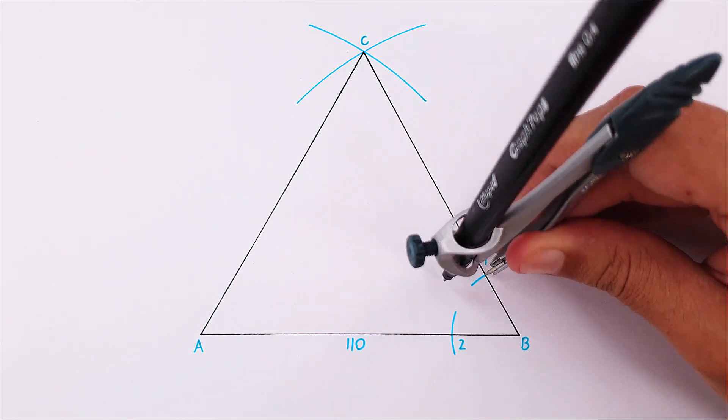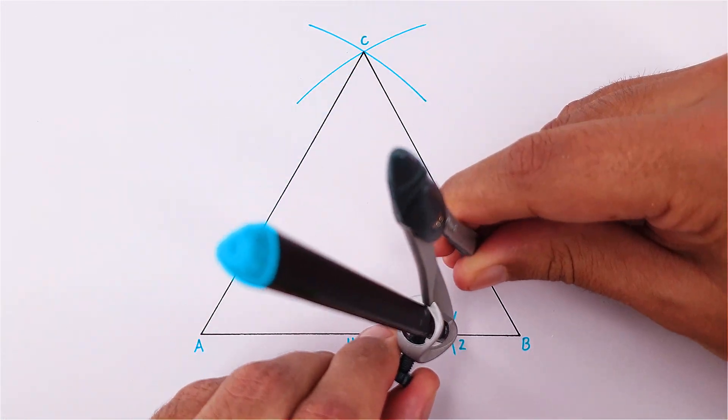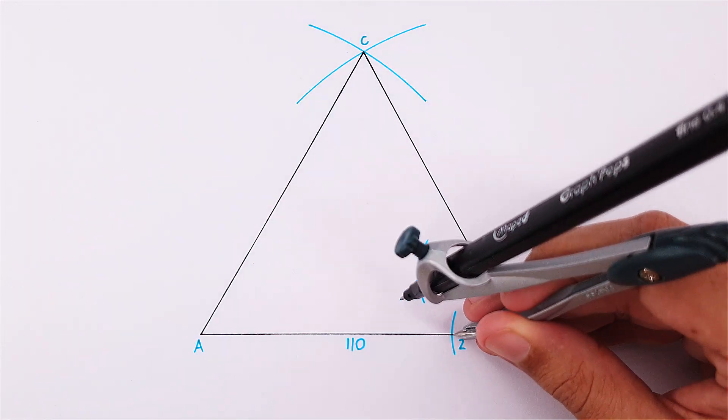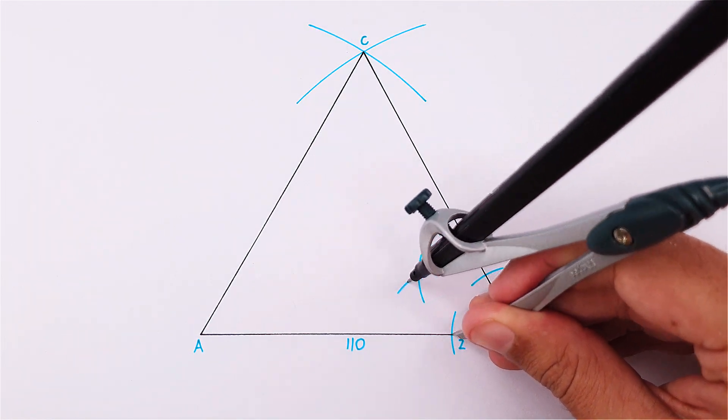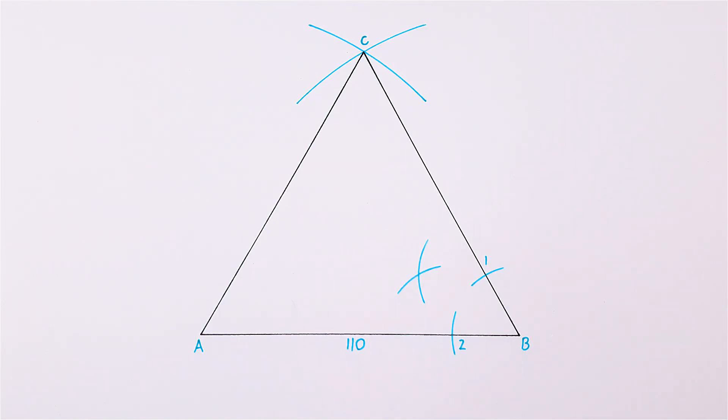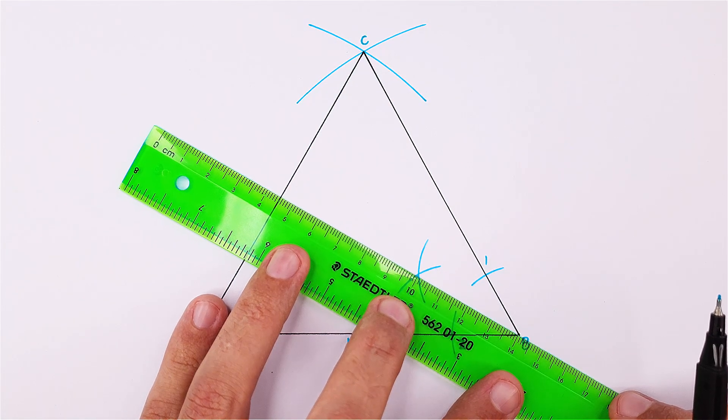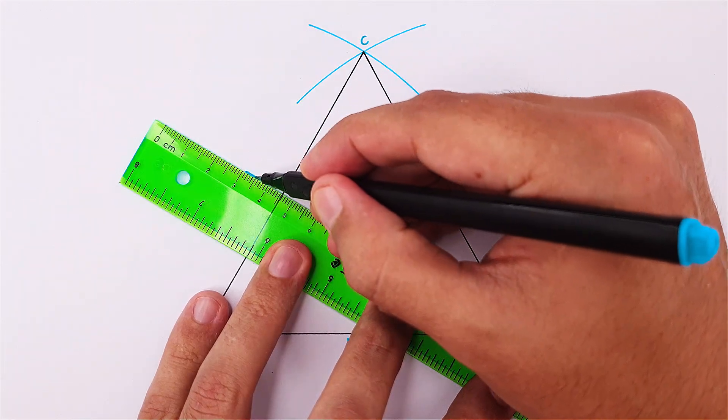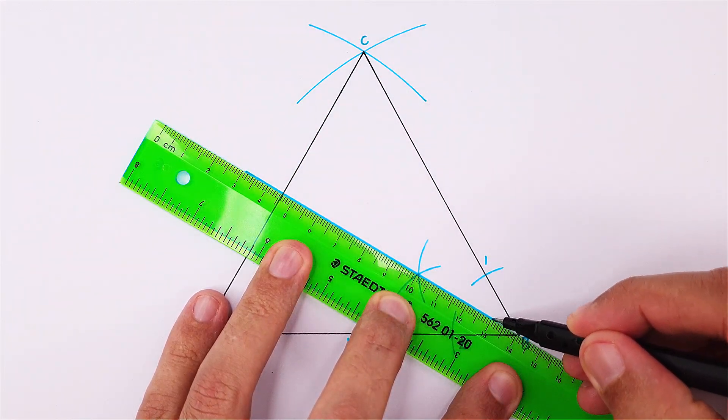Next, place your compass on point 1 and adjust it to point 2. Draw an arc towards the center of the triangle. Using the same measurement, repeat the step on point 2 to intersect the previous arc. Use a ruler to draw a line from point B through the intersection. This is your first angle bisector.